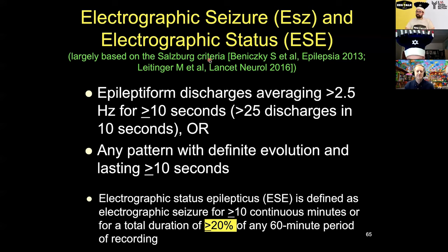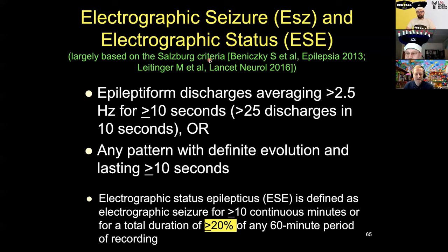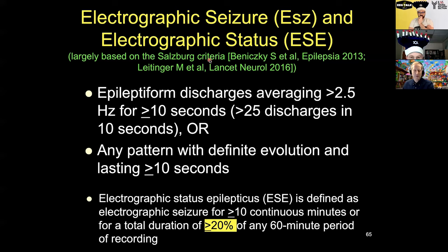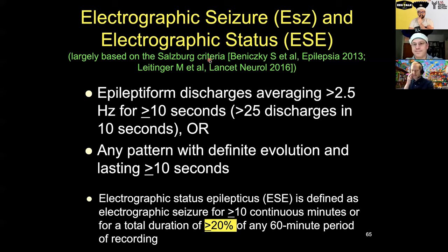A good question. So let's talk about seizures. The ACNS definition of seizure was largely based on what's become known as the Salzburg criteria. It's epileptiform discharges that average more than 2.5 hertz for at least 10 seconds. The best way to assess that is not to look at one second at a time but just to count how many discharges occur in 10 seconds.